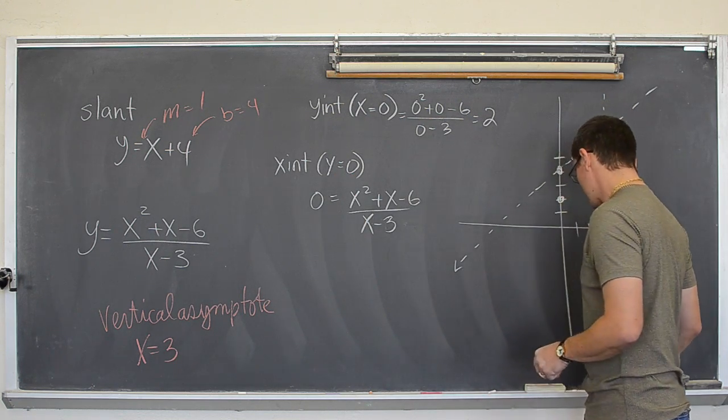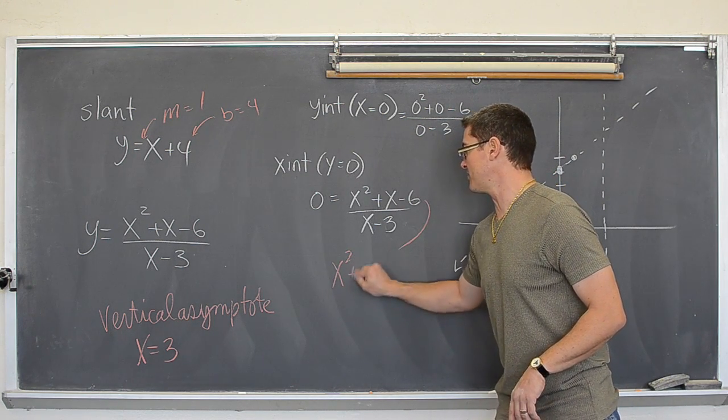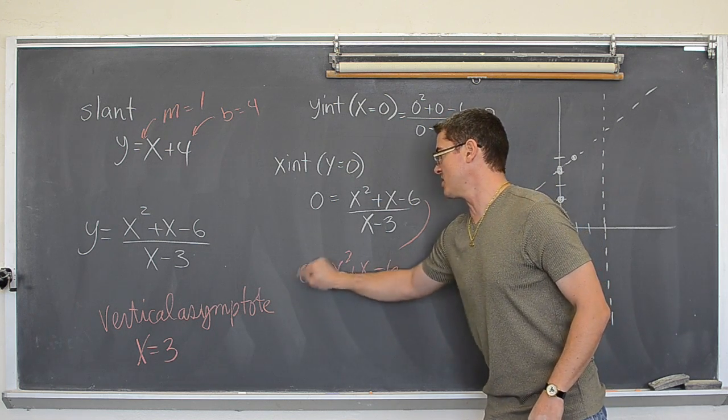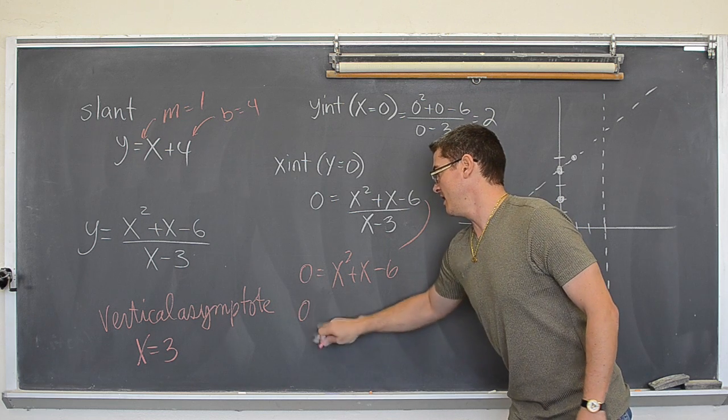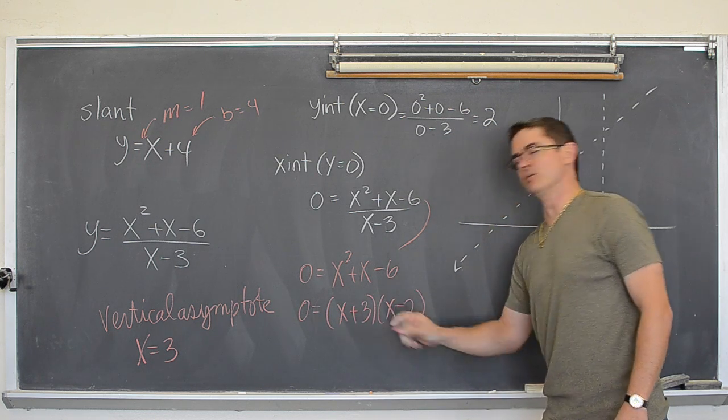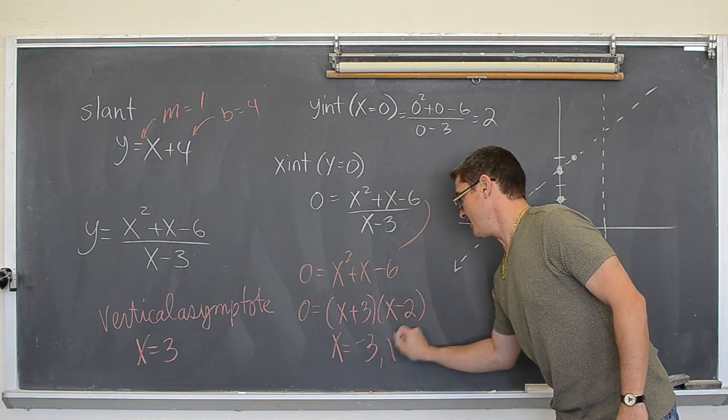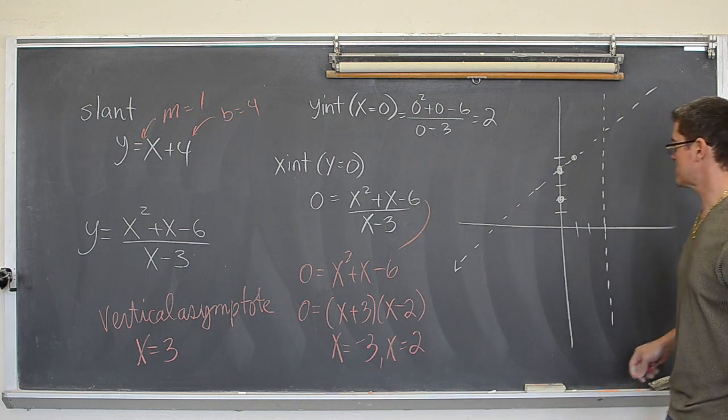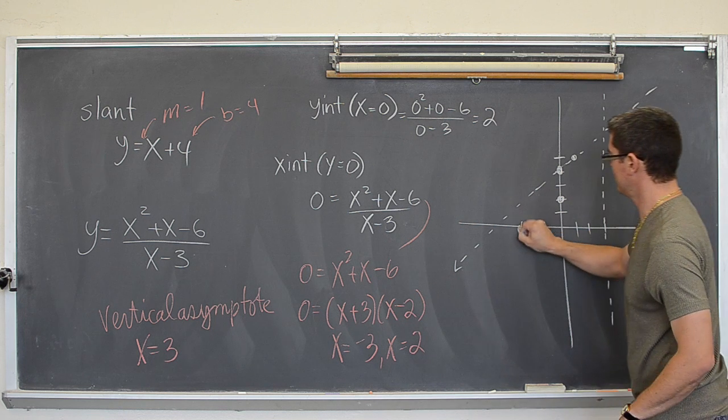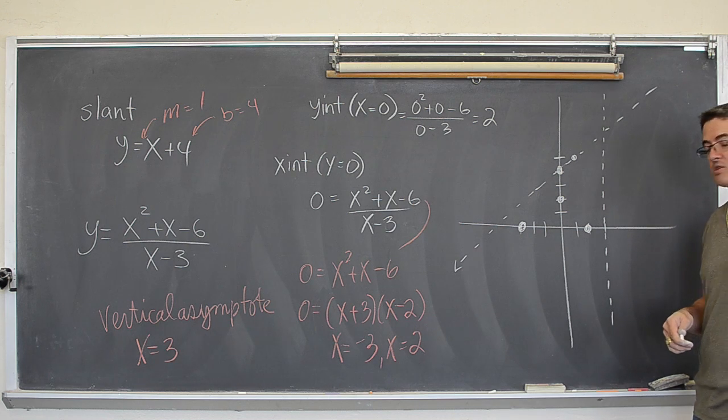So, when I find with rational functions, when I am looking for an x intercept, when I am trying to get y equal to 0, all I really care about is the top. So, I am going to take the top of this function and pull it out and say, well what is going to make x squared plus x minus 6 equal to 0? Well, that is going to be x plus 3 and x minus 2. So, my x intercepts are negative 3 and 2.